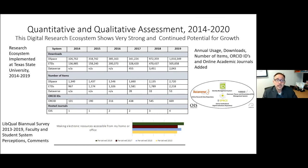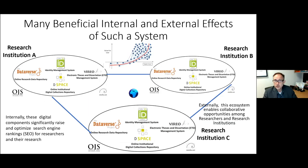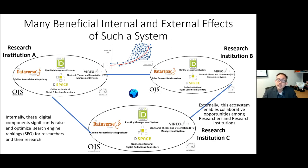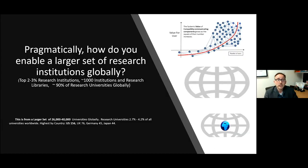We've done a lot of quantitative and qualitative assessment between 2014 and 2020, and this digital research ecosystem shows very strong and continued potential for growth. There are also many beneficial internal and external effects. Internally, these digital components together significantly raise and optimize search engine rankings for research — essentially discoverability. Externally, this ecosystem enables collaborative opportunities among researchers and research institutions.